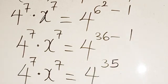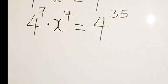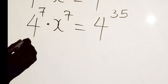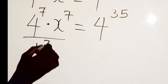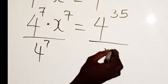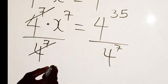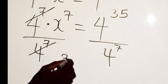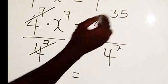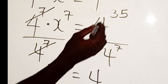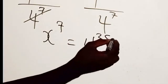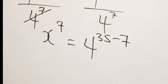So now from there, again we divide both sides by 4 to the power of 7. So this we cancel, we have x to the power of 7 equals, so here we're going to have 4 to the power of 35 minus 7. That is from the law of indices.